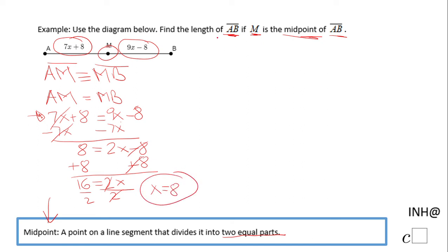Well again, we're now going to look back to our problem, and this says find AB. So I'm going to look and I'm going to find one of the segments. Let's say AM. And if you take a look, AM is 7x plus 8.